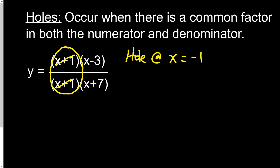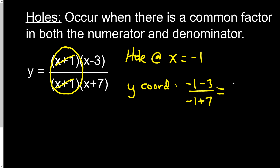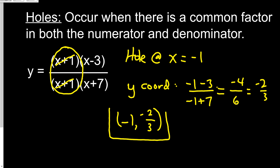To figure out how far up and down the hole is on the graph, we know the x value is negative 1, but we need the y-coordinate. We plug negative 1 into what's left over after canceling x plus 1: negative 1 minus 3 on top and negative 1 plus 7 on bottom. That gives negative 4 over 6, which reduces to negative 2 thirds. So our hole is located at negative 1 comma negative 2 thirds.